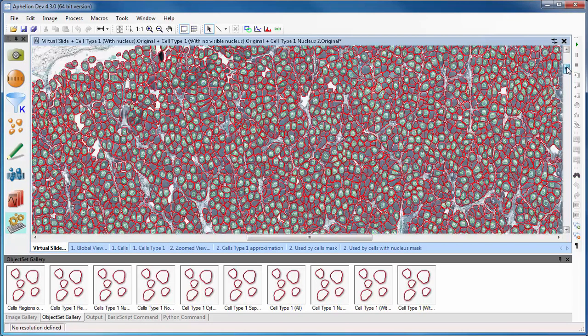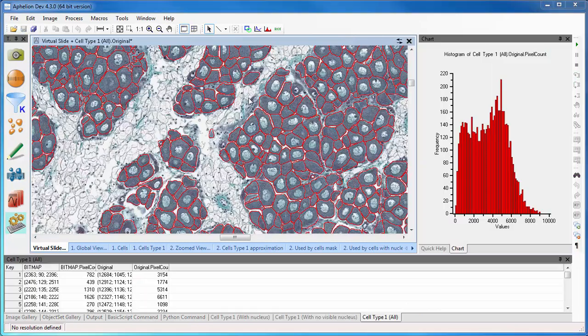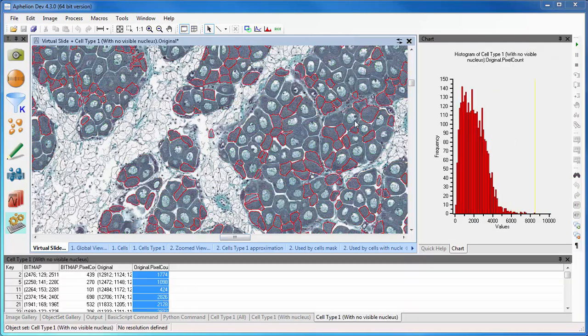The measurements can now be easily displayed as a histogram for cell area for all of the measured cells, just the measured cells with nuclei, or just the measured cells without nuclei.